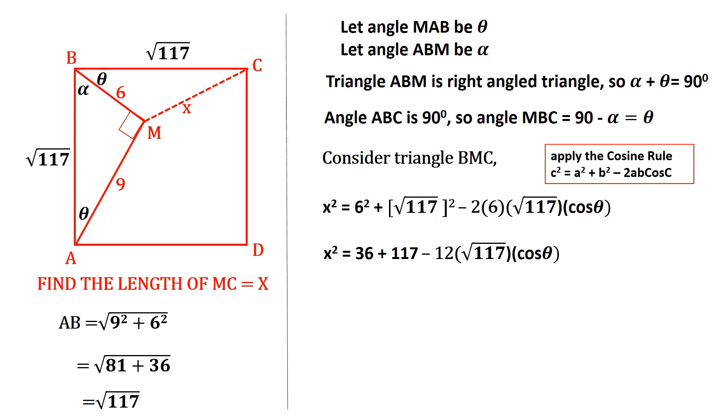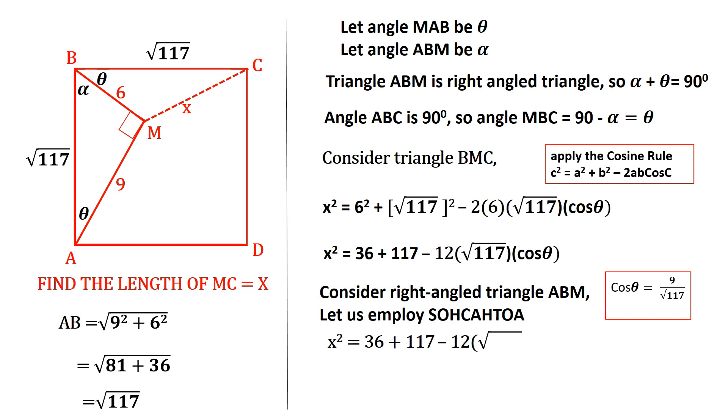Now, from triangle ABM, it's possible to find what cos theta is. It was right angled, so we're going to employ SOHCAHTOA so that cos theta is 9 over the hypotenuse square root of 117. We're going to substitute this into the expression above so that X squared equals 36 plus 117 minus 12 times square root of 117 times 9 over square root of 117.